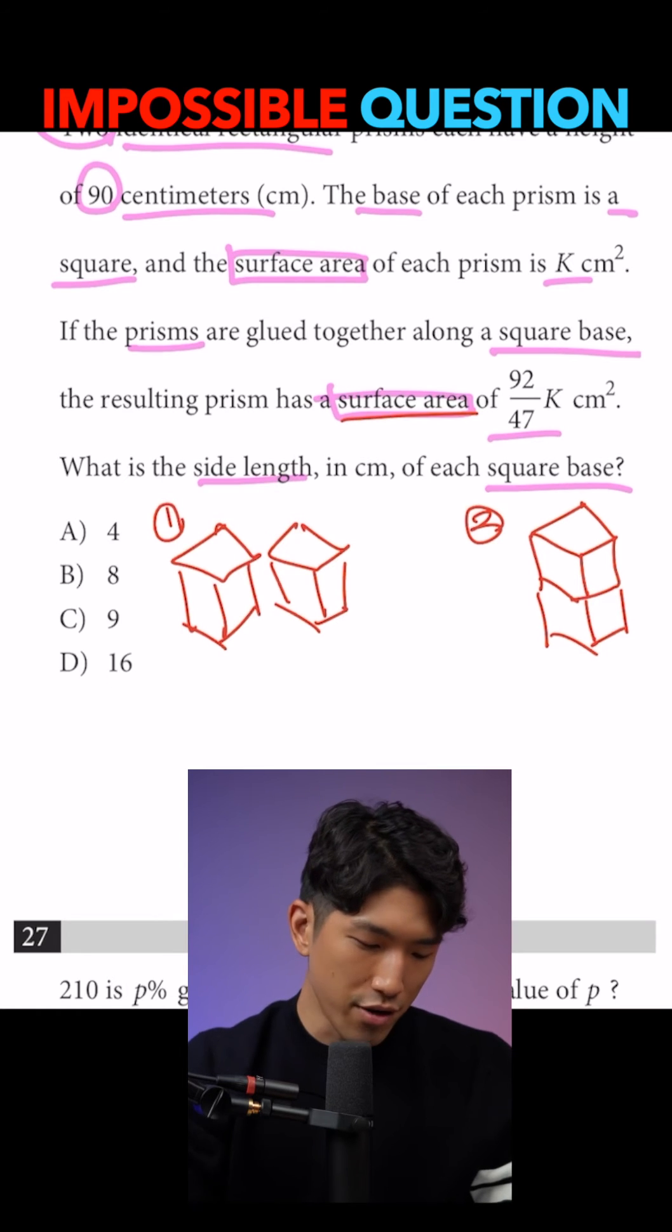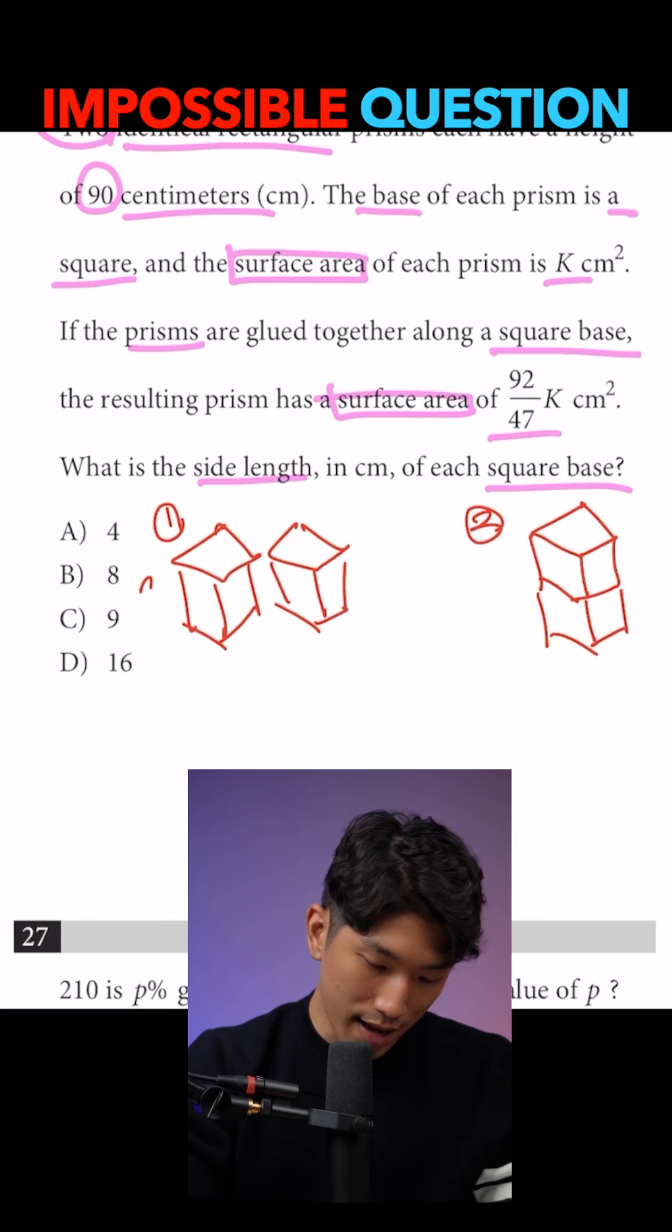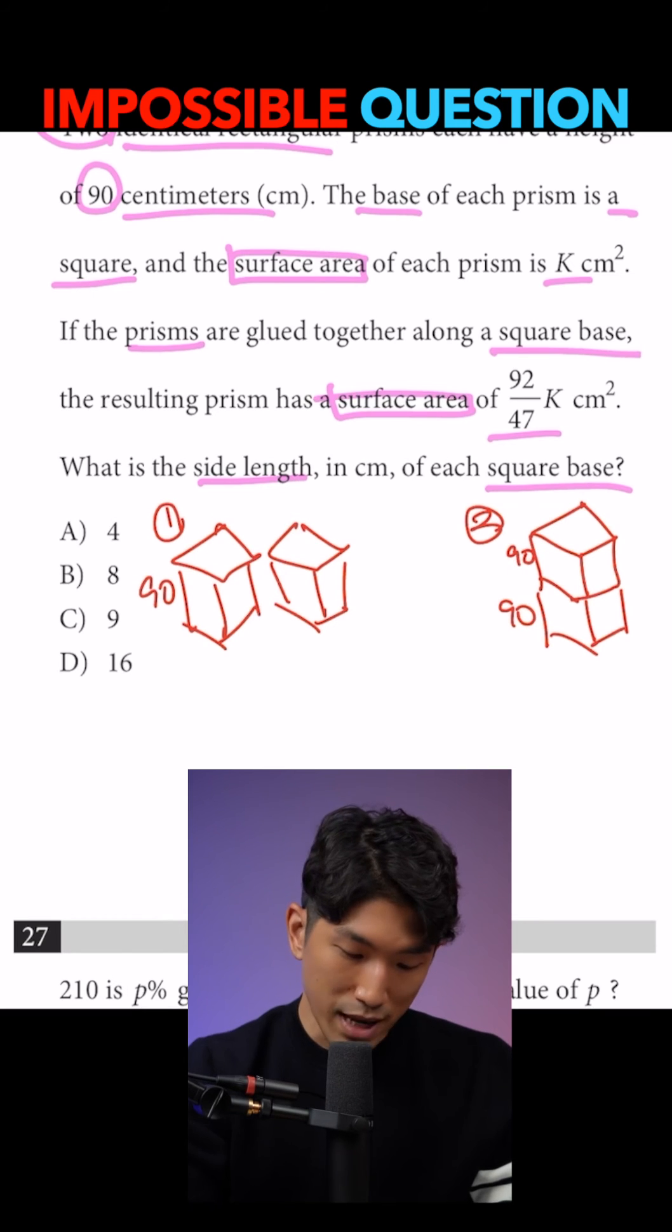And because we're talking about surface area, let's go over surface area for each of these types. Measurements wise, they're going to have a height of 90, so 90 and 90 here, and a square base, but we don't know what the side length is, so I'm just going to call it S.